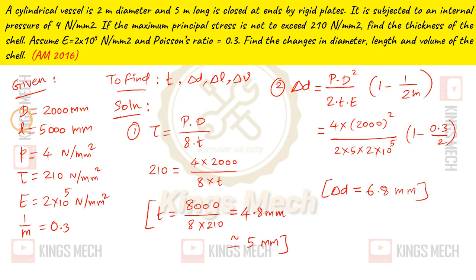Given data: diameter D = 2000 mm, length L = 5000 mm, pressure P = 4 N/mm², maximum stress T = 210 N/mm², Young's modulus E = 2×10⁵ N/mm², Poisson ratio μ = 0.3. What to find? First, thickness t, then δD, δL, δV.